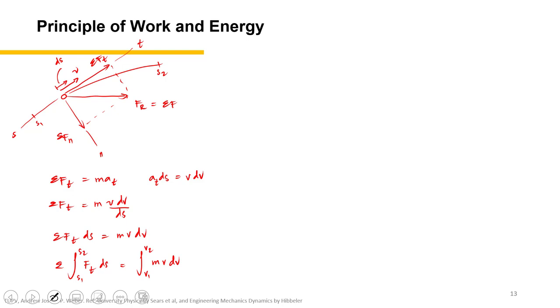We can integrate the right part of the equation. The integral from S1 to S2 of Ft ds equals one half m V2 squared minus one half m V1 squared.